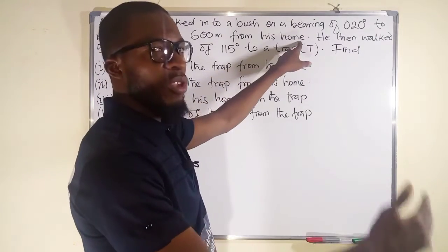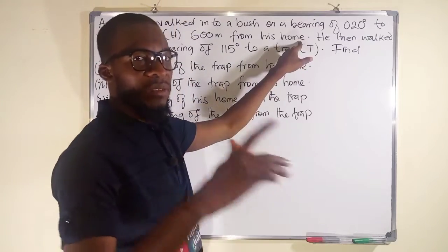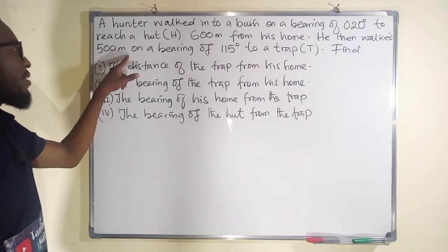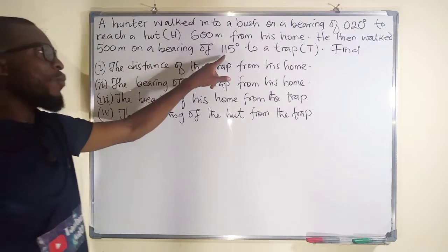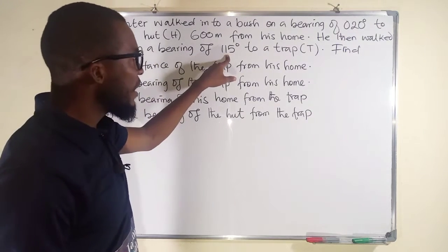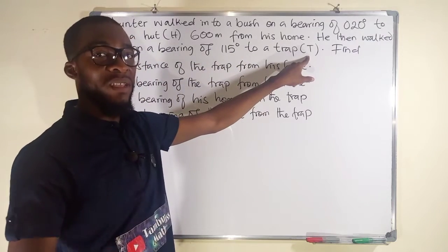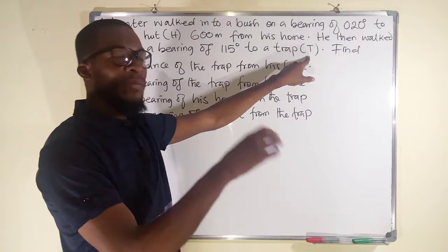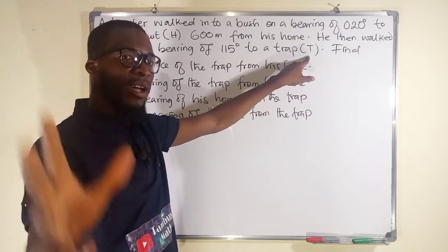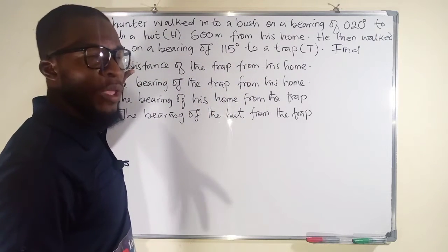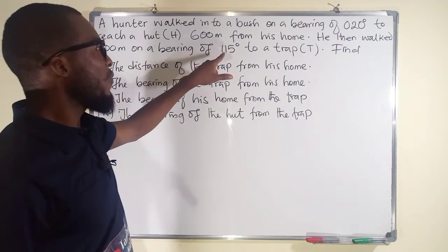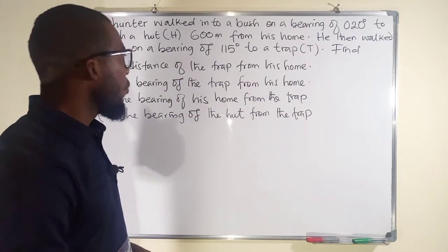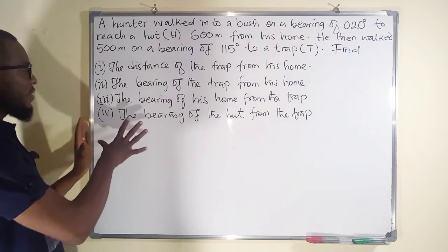This means he started the trip from his home to a hut which is 600 meters away. He then walked 500 meters on a bearing of 115 degrees to a trap — meaning he set a trap away from his hut, and from his hut to that trap is 500 meters on a bearing of 115 degrees.